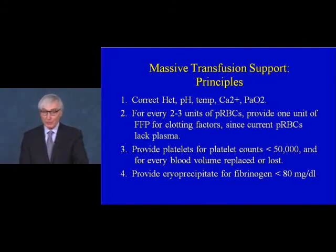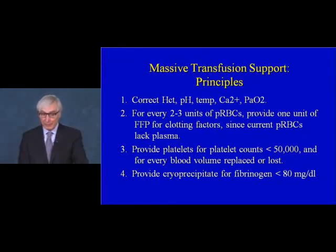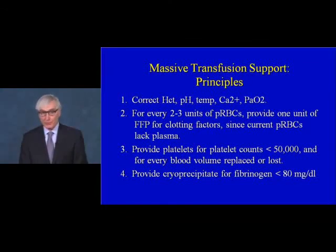In massive transfusion support, a big emphasis is placed on correcting all the parameters enumerated above, but also on giving platelets for every so many units of packed red cells, since current blood cell products do not contain plasma. Providing missing fibrinogen is also important: if the fibrinogen level falls below about 80 milligrams per deciliter, a product called cryoprecipitate, which is very rich in fibrinogen, should be used.